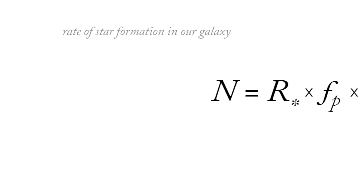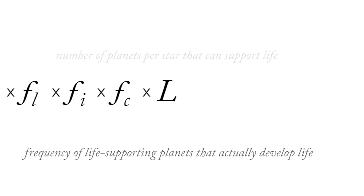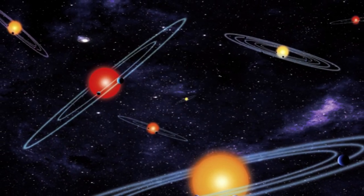We can use part of the Drake equation to figure out just how many stars in our stellar library have life-supporting planets. We can start with the number of stars that have any planets at all.